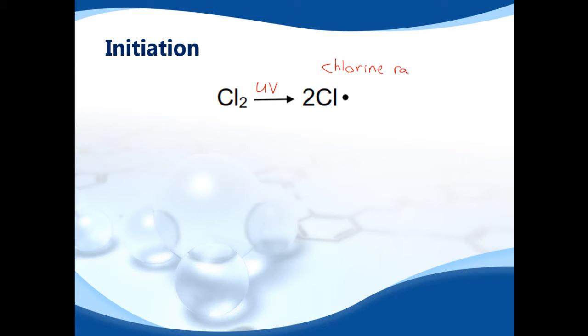A chlorine radical basically has an unfilled valence shell of electrons. It only has seven electrons in the outer shell. Now we know that chlorine wants eight, so that makes it very reactive. These radicals, or free radicals, are very reactive.